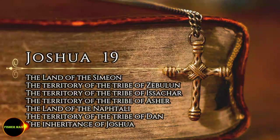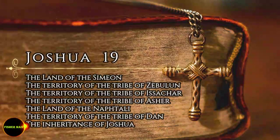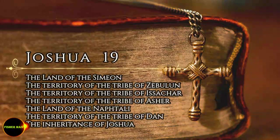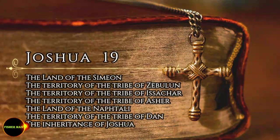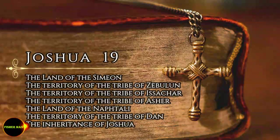These are the territories that Eliezer the priest, Joshua son of Nun, and the heads of the tribal clans of Israel assigned by lot at Shiloh, in the presence of the Lord, at the entrance to the tent of meeting. And so they finished dividing the land.